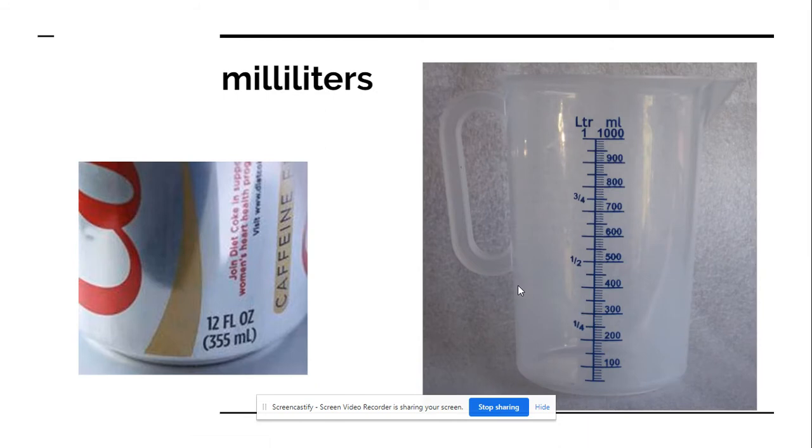So if you look at a measuring cup, this one has liters on one side and milliliters on the other. And we know that one liter is also equal to a thousand milliliters.